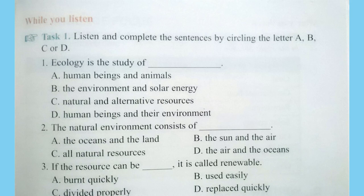Ecologists study their importance and how to use them carefully. According to ecologists, resources are divided into two groups: renewable and non-renewable. When a resource is used, it takes some time to replace it. If the resource can be replaced quickly, it is called renewable. If it cannot be replaced quickly and easily, it is non-renewable.